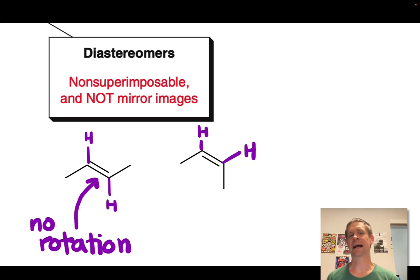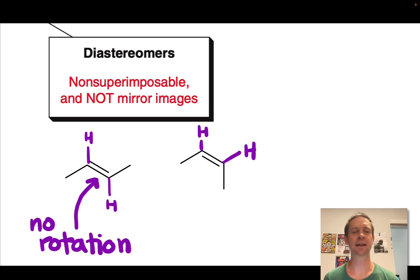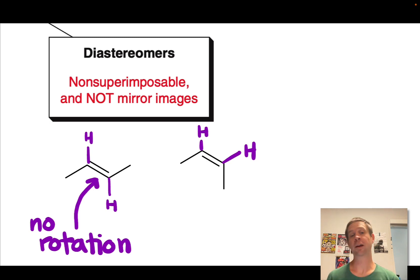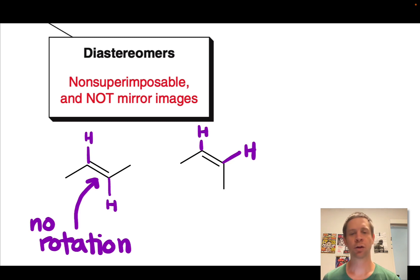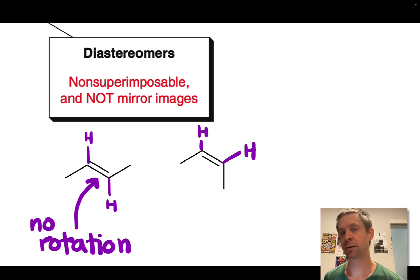Cis and trans alkenes are diastereomeric, all other things being equal, as a result of the restricted rotation around the carbon-carbon double bond and the fact that these are not mirror images, but they do contain groups in different positions in three-dimensional space.